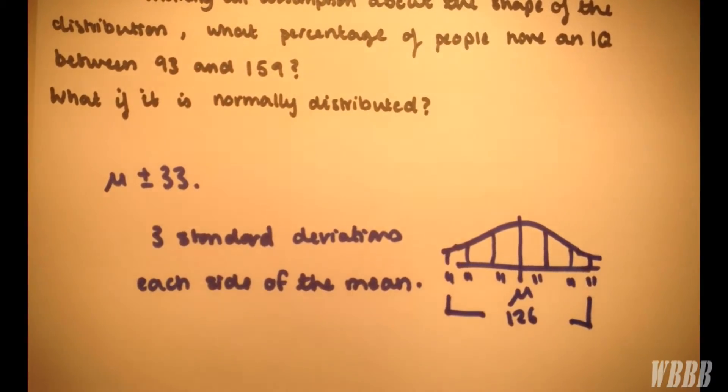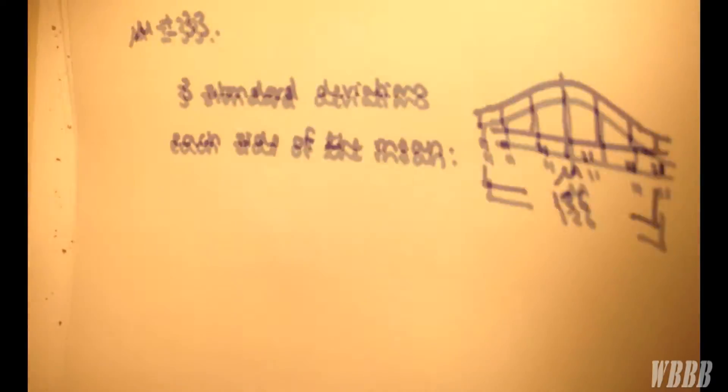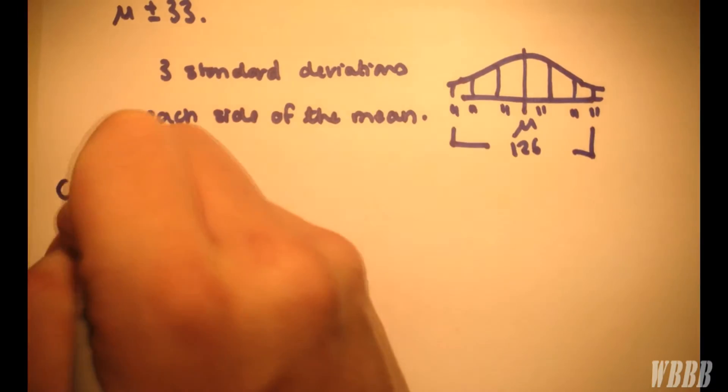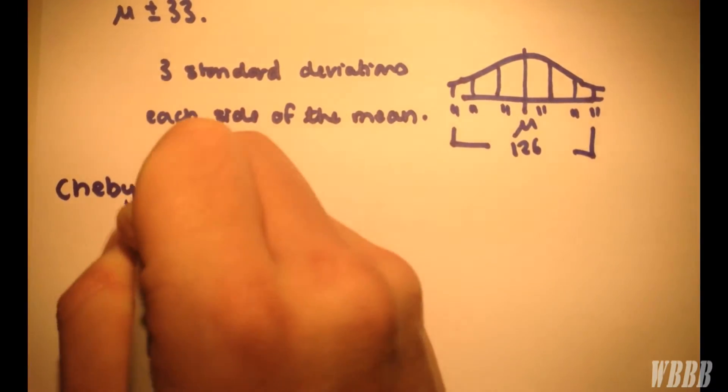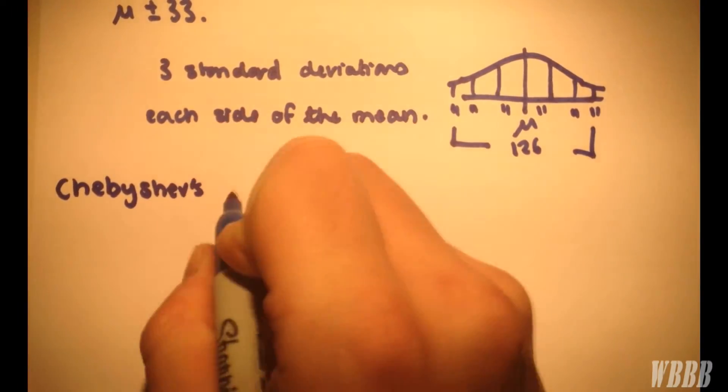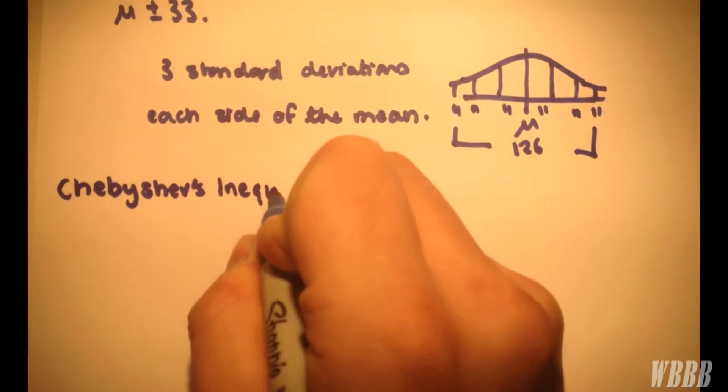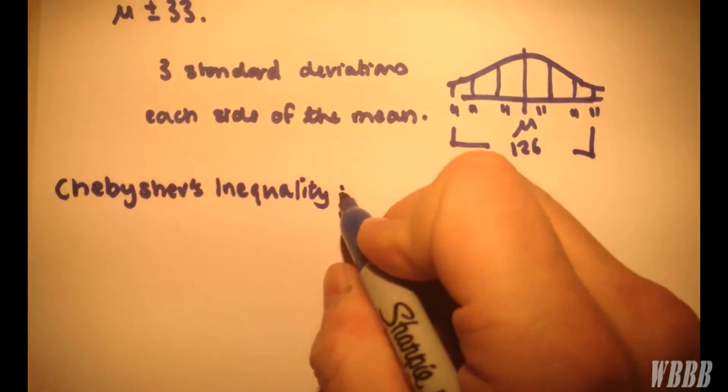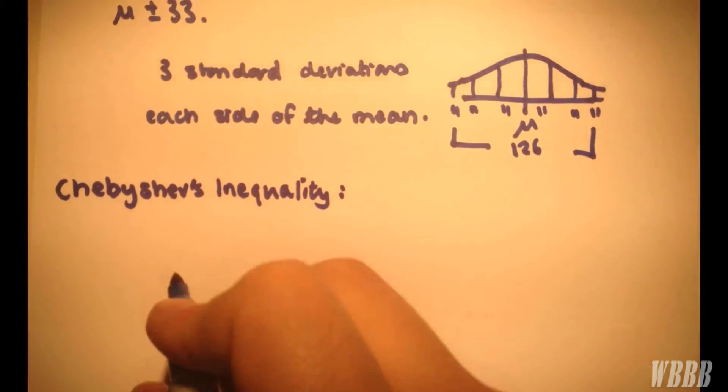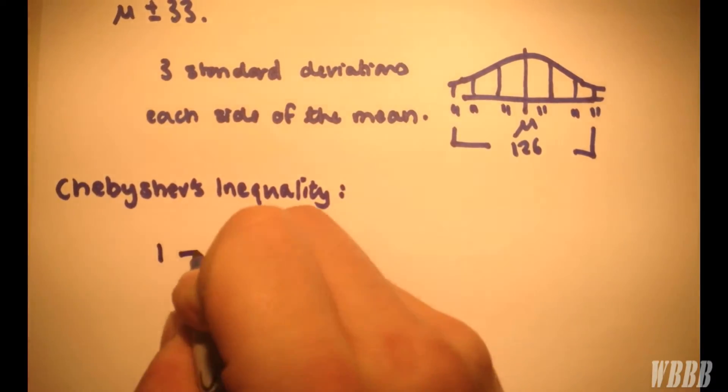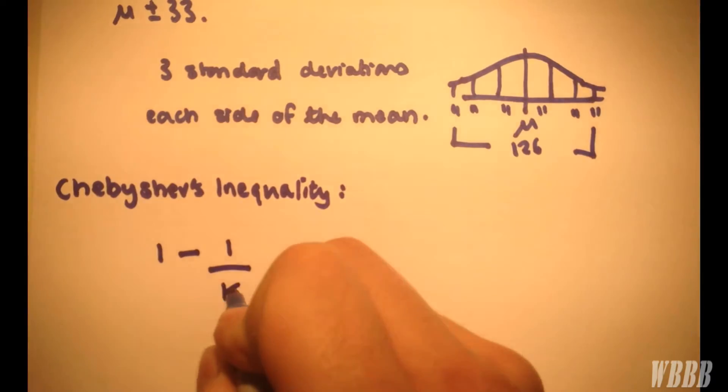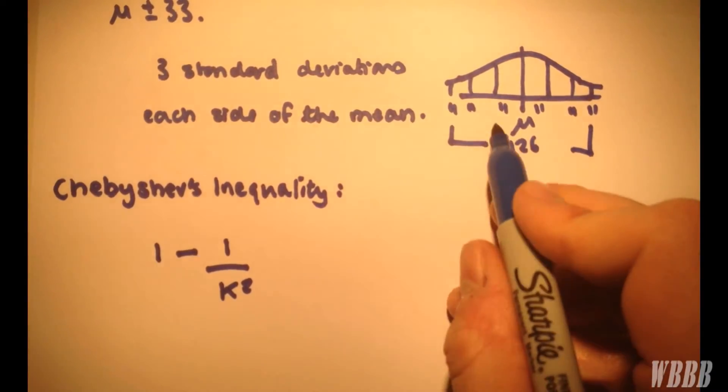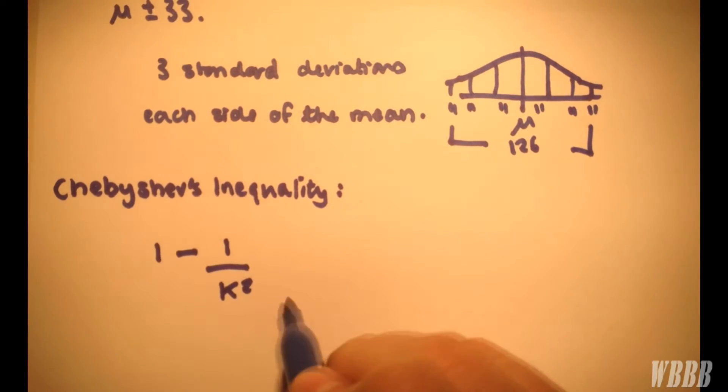So now we use something pretty cool called Chebyshev's inequality, which is a very simple method but very useful. So we have 1 minus 1 over k squared, where k is the number of standard deviations we're going to be considering each side of the mean.